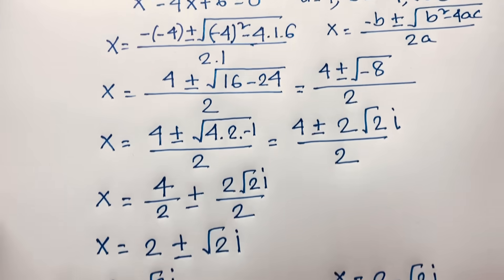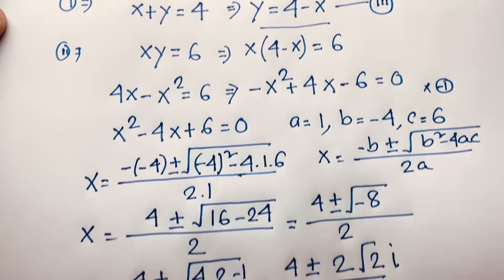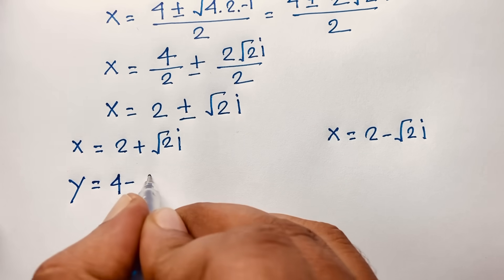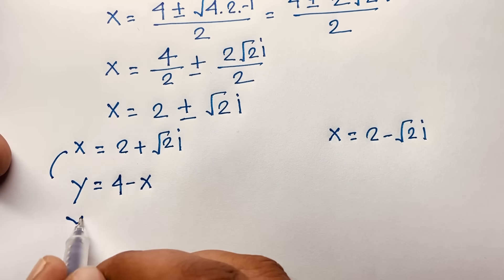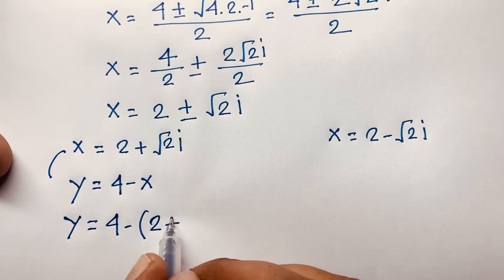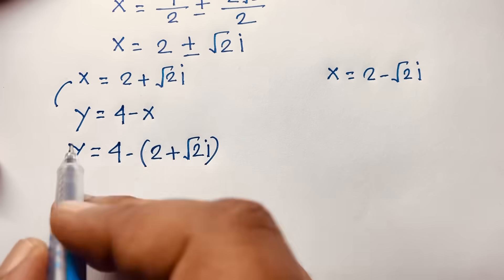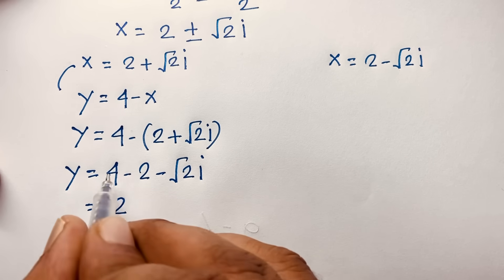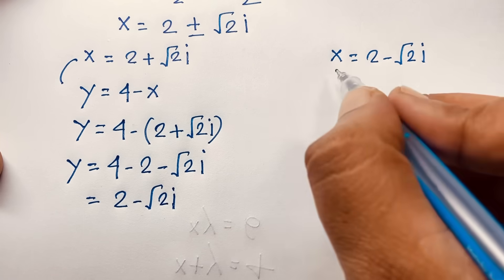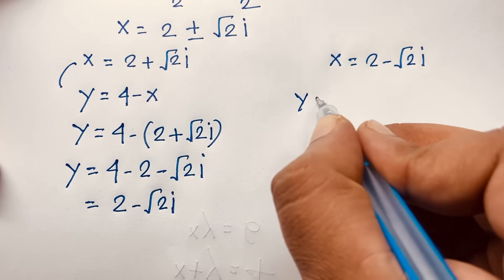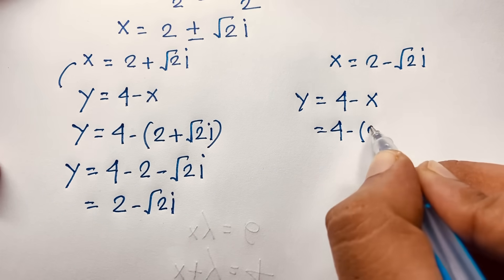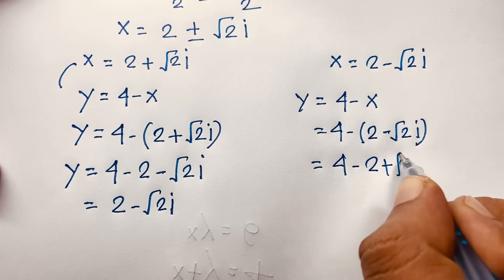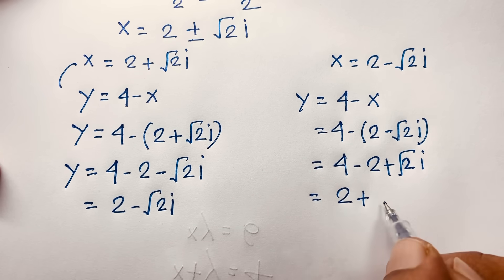Our target is the value of y. Recall our third equation: y is equal to 4 minus x. When x is equal to 2 plus square root 2i, then y equals 4 minus (2 plus square root 2i), which gives y equals 2 minus square root 2i. When x is equal to 2 minus square root 2i, then y equals 4 minus (2 minus square root 2i), which gives y equals 2 plus square root 2i.